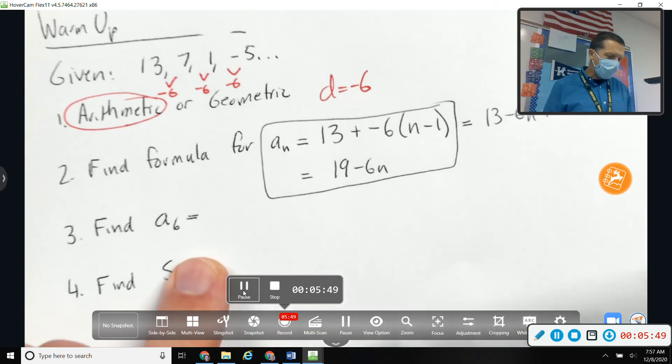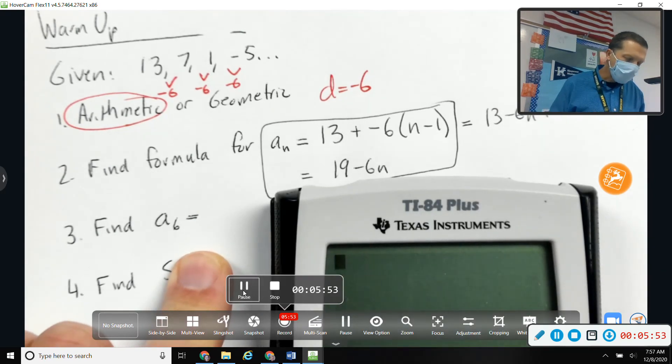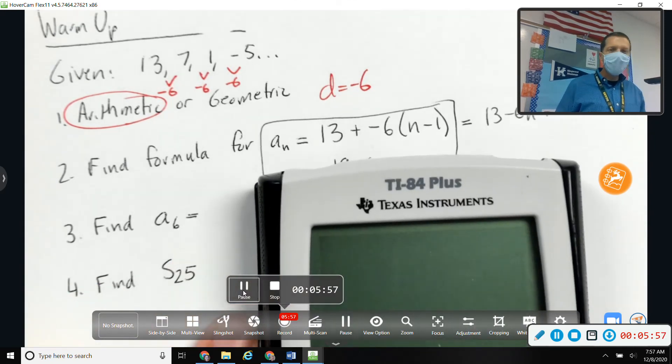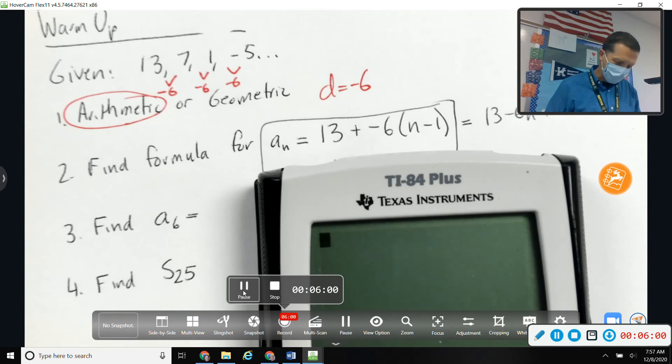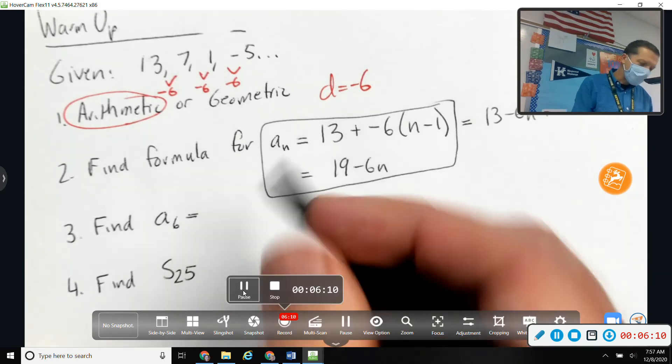a₆ means I'll just plug in the six to the formula. And even though I have a simplified version, it makes more sense in my mind to use the original because I've started at the first term and I'm going to subtract six five times. Yeah, start at 13 and subtract six five times, and I get negative 17.